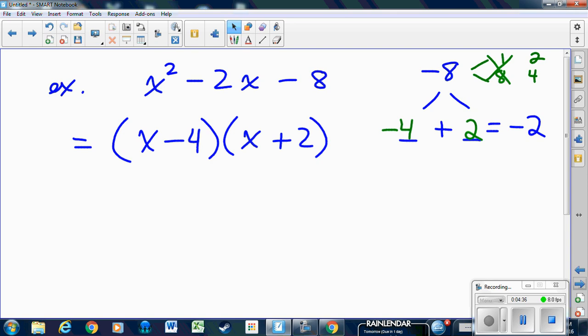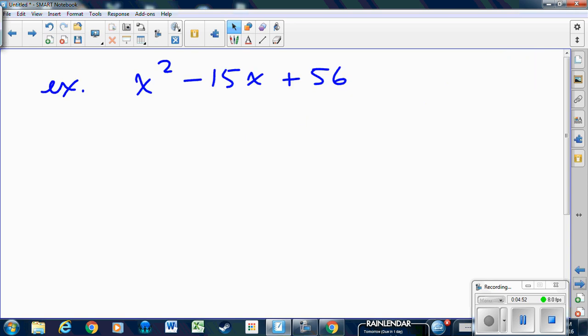So this takes away the necessity to do guess and check. If you set up your tree, everything just basically tells you what the two numbers have to be, and then you can substitute them in. Looking at another example here, this time I have 56 that goes to the top of my tree, and -15 that goes to the end of my tree. We need two factors of 56 that multiply to 56 and add to -15.